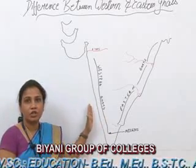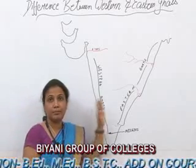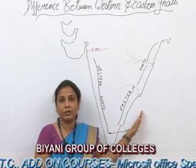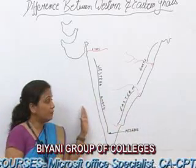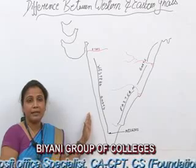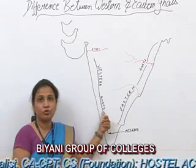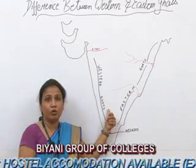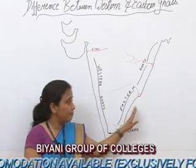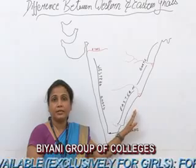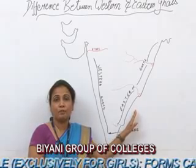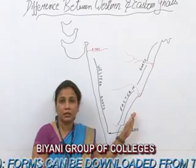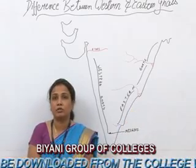The Western Ghat has a structural unity, but in the Eastern Ghat the structural unity is lacking. The Western Ghat is perpendicular to the Southwest Monsoon, which is why it causes great rainfall over the West Coastal Plain, while the Eastern Ghat is almost parallel to the Eastern Monsoon, resulting in low rainfall in the East Coastal Plain.